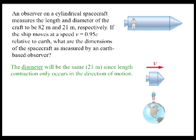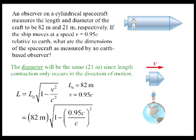For the length contraction in the line of motion, we apply the length contraction formula, L equals L0 times the square root of 1 minus v squared divided by c squared. With L0 equal to 82 meters and v equal to 0.95c, we have L equals 82 meters times the square root of 1 minus 0.95c squared divided by c squared, which is equal to 26 meters.